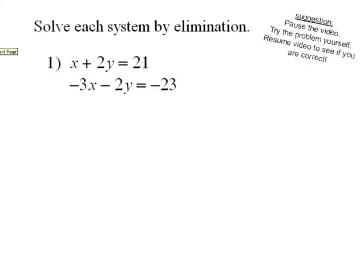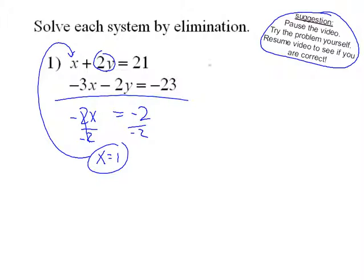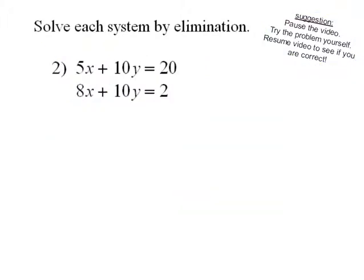At this point you've seen all the types. You can pause the video, try the problem yourself, then resume to check. I'll go fast since you can replay. First practice problem: I notice 2Y and negative 2Y, so those cancel out immediately. Adding gives 2X equals negative 2, so X equals 1. Substituting back, 1 plus 2Y equals 21, subtract 1 to get 2Y equals 20, divide by 2, Y equals 10. The point of intersection is (1, 10).